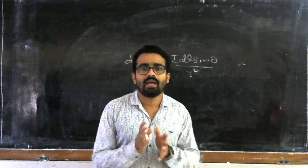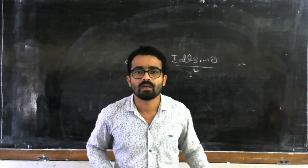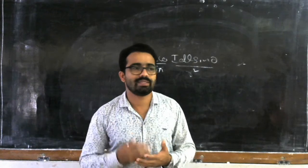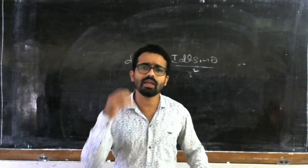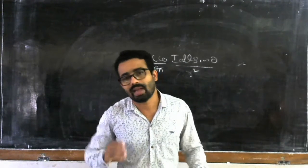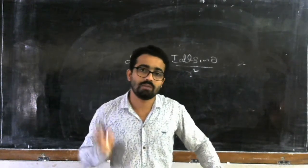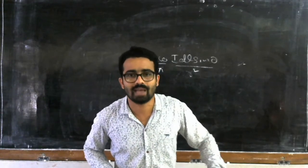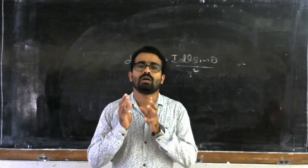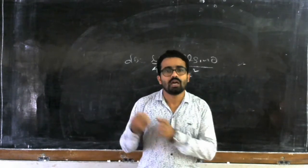During that time there was another scientist who was thinking about how to make finding the magnetic field easier. That was made possible by a scientist called Ampere. We already heard this name Ampere, because in current electricity we studied that the unit of current is Ampere, given by the scientist whose name is Ampere.